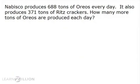Let's see how this technique might help us solve a word problem. Nabisco produces 688 tons of Oreos every day. It also produces 371 tons of Ritz crackers. How many more tons of Oreos are produced each day? This question is asking us, what is 688 minus 371?